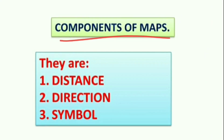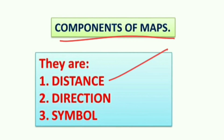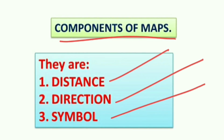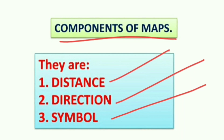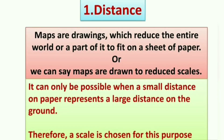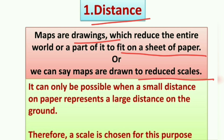There are three components of maps: distance, direction, and symbol. Let's discuss each in detail. The first component is distance. Maps are drawings which reduce the entire world or a part of it to fit on a sheet of paper. In simple terms, maps are drawn to reduced scales — meaning that in reality an area will be measured in kilometers, but it is shown in centimeters on the map.